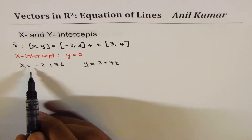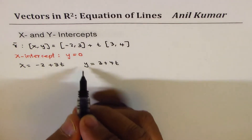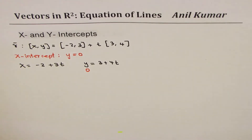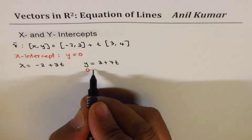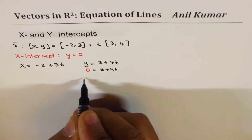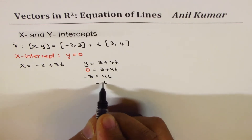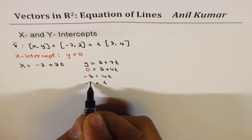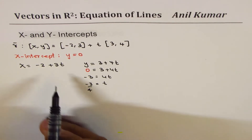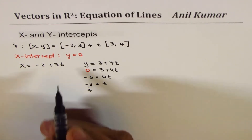Now in this equation, if I make y equal to 0, that means I substitute 0 here. So if I substitute 0, I could find the value of t: 3 plus 4t equals 0, or minus 3 equals 4t, or t equals to minus 3 over 4. This value of t can be substituted for x to find the x-intercept.